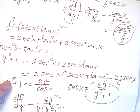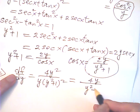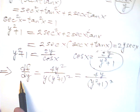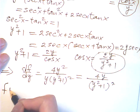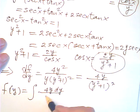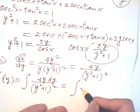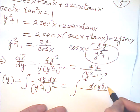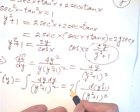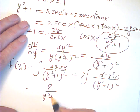So df/dy = 4y over (y² + 1)². Now I can find f(y) by integrating. The integral of 4y over (y² + 1)² dy — I substitute u = y² + 1, du = 2y dy, so 4y dy = 2 du. This gives −2 over (y² + 1) + C.